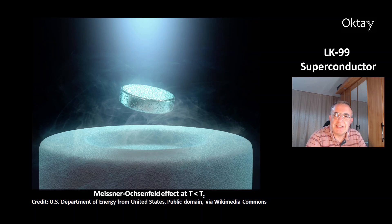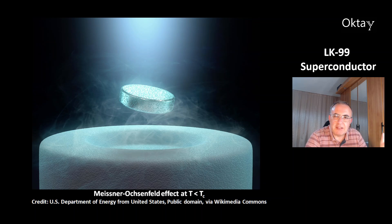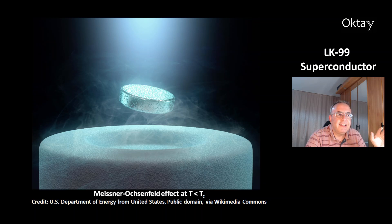This is a nice picture of the Meissner-Ochsenfeld effect. It happens if you cool down a superconductor to below the critical temperature. Then you get this effect — the magnet is floating over the superconductor.